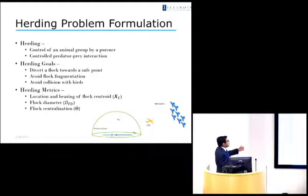And so for this problem, we will have these herding goals where we would ideally want to divert a flock towards a safe point, a safe point that is far away from the airport. We would want to avoid flock fragmentation because having a flock is bad enough and having two is worse. We would also want to avoid collision with the birds because it's a safety constraint. There are some herding metrics. We'll try to see how the flock behaves by seeing how the flock centroid moves or the flock diameter changes. The flock diameter here is a bounding ball that will capture all of the birds.